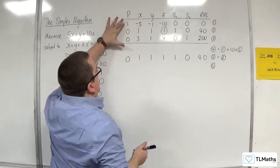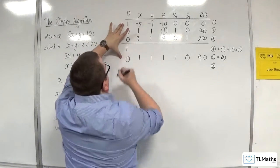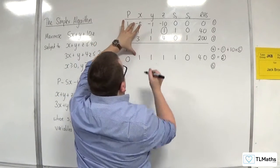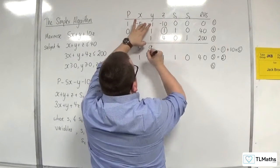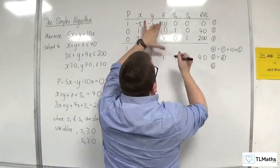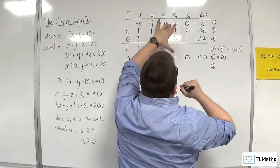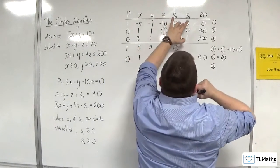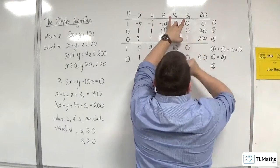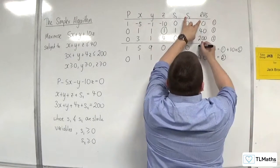So 1 plus 10 lots of 0 is 1. Minus 5 plus 10 lots of 1 is 5. Minus 1 plus 10 lots of 1 is 9. Minus 10 plus 10 lots of 1 is 0. 0 plus 10 lots of 1 is 10. 0 plus 10 lots of 0 is 0. And 0 plus 10 lots of 40 is 400.